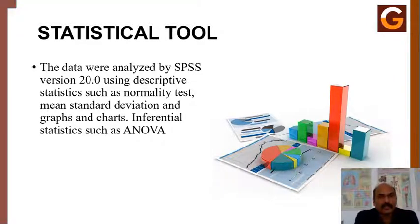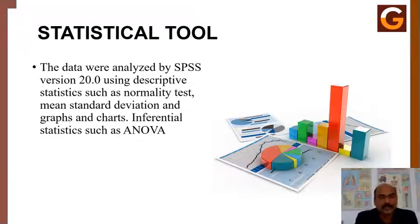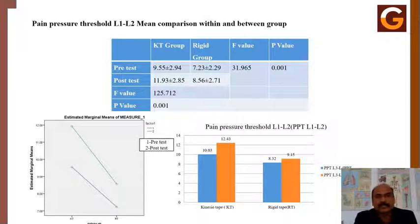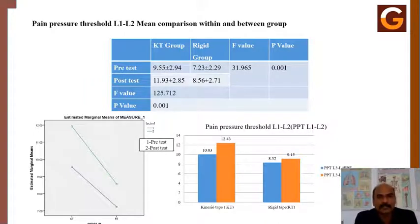After a two-week intervention program with three sessions per week, data was collected by pain pressure thresholds before and after. At the L1–L2 interspinous level, mean comparison results found a significant difference in both the kinesio tape group and the rigid tape group individually and between groups, indicating that the kinesio tape group was better at improving pain pressure thresholds at the L1–L2 level.